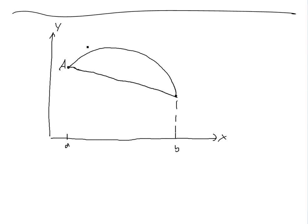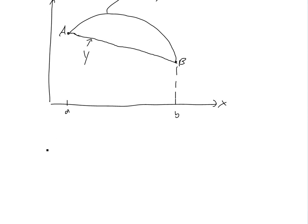So let's call this point a, and this is f of x, and this is b. If we write the equation of a line here, we know the slope is just equal to m, and the equation of a line is y equals mx plus b. But we could also rewrite it in terms of the slope. Let's say this is x right here — this point is on the equation of a line.